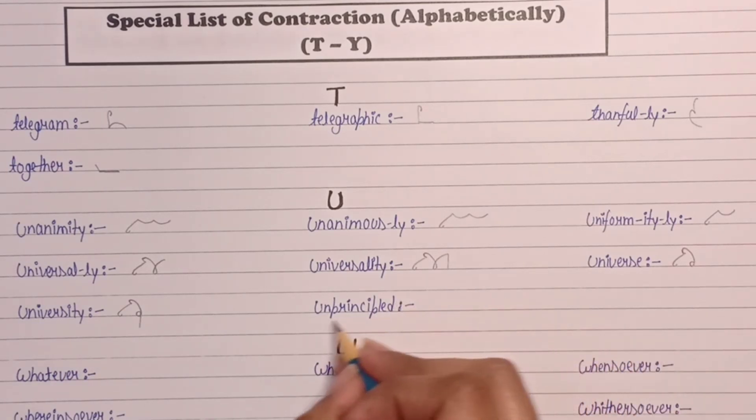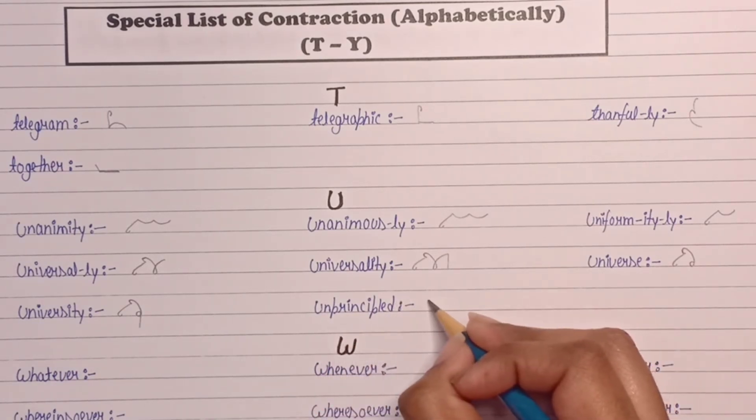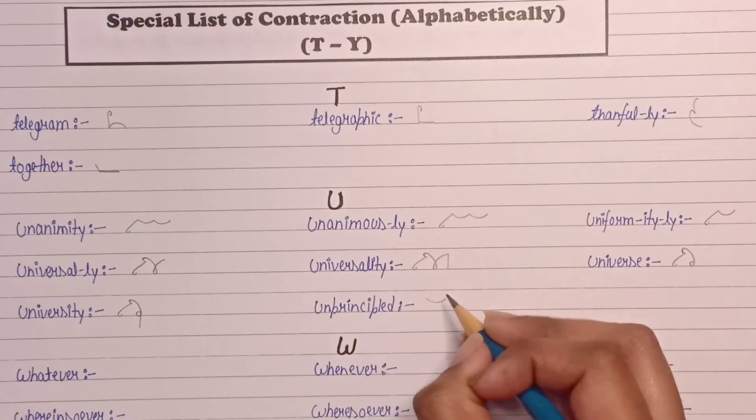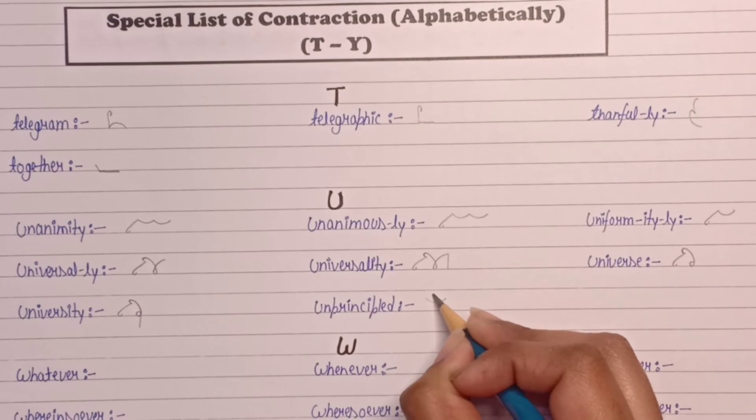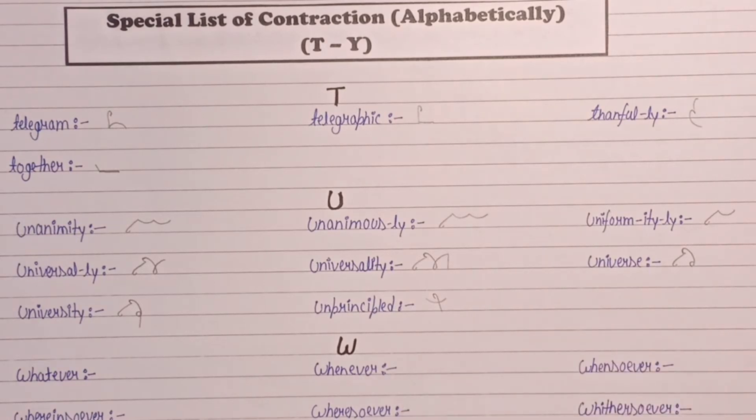Next is unprincipled. UN and for principal disjoin it: P-L. Unprincipled.